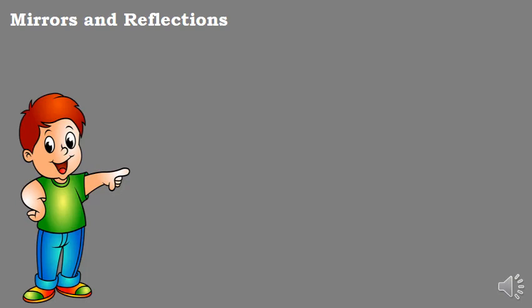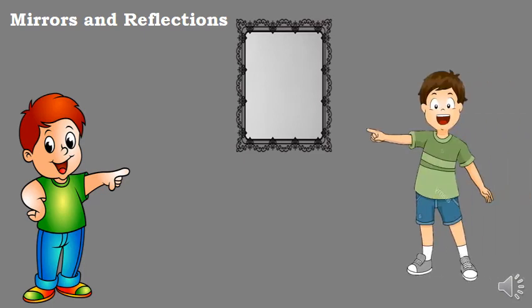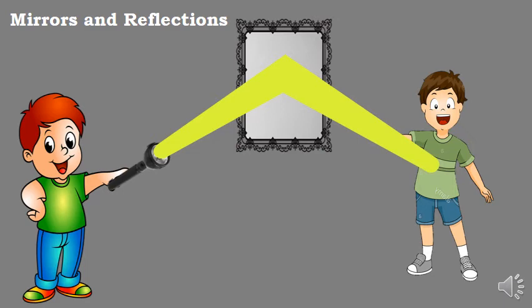We also see reflections of trees, buildings and other objects in water, ponds, or lakes. Let us perform one activity in a dark room. Stand at the corner of a room with a mirror. Call your friend and hold a torch so that the beam of light falls on the mirror. The light will get reflected towards your friend. Adjust the direction of the torch if needed. You should see a patch of light on your friend's side. This suggests that the mirror changes the direction of light that falls on it.